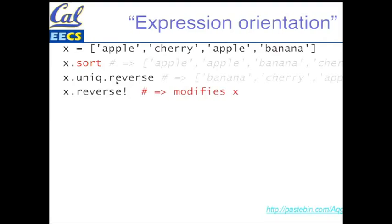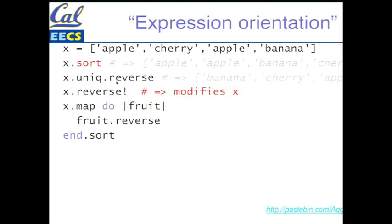These are examples of methods where there's both a safe version and a destructive unsafe version. There's map, just like in Scheme and Python and other languages. I can take an array like X and for each element, a fruit, call reverse on the fruit. Now you might say: wait, up here you were calling reverse on an array, but here you're calling reverse on strings. Yes — that is the magic of duck typing. We'll get to that.